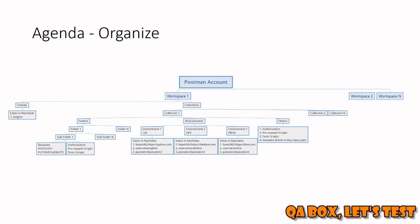Inside each collection you can have multiple folders, and you can have multiple environments. A collection provides other features as well. Inside a folder there can be any number of subfolders, and under each folder you can create any number of requests — like PUT, POST, PATCH, DELETE, and GET. You can also define authorization at the folder level, write pre-request scripts at the folder level, and write tests at the folder level.